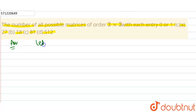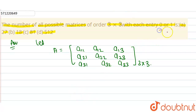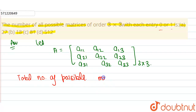Let's assume a matrix A that is equal to A11, A12, A13, A21, A22, A23, A31, A32, and A33. So this is a 3×3 matrix and each entry can be filled with 0 or 1. The total number of possible matrices is equal to 2 multiplied 9 times.